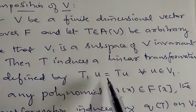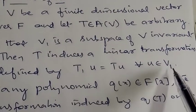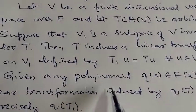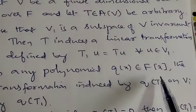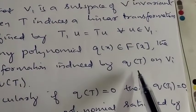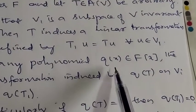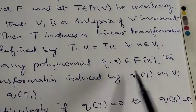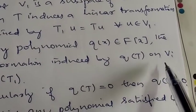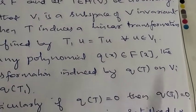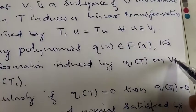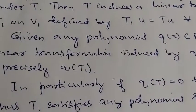T1 is nothing but the restriction of T to the subspace V1. Now, given any polynomial Q(x) in F[x], the linear transformation induced by Q(T) on the subspace V1 is nothing but Q(T1). That is, Q(T)|V1 = Q(T1).